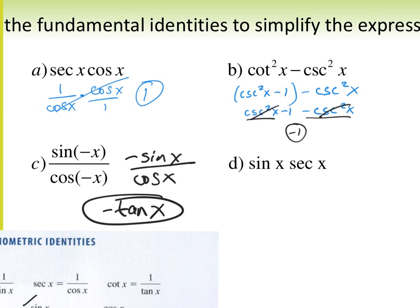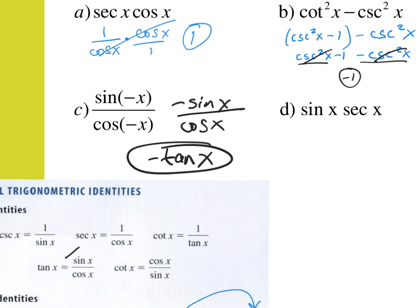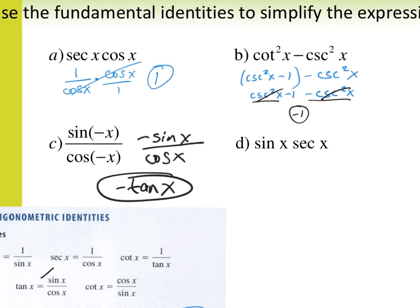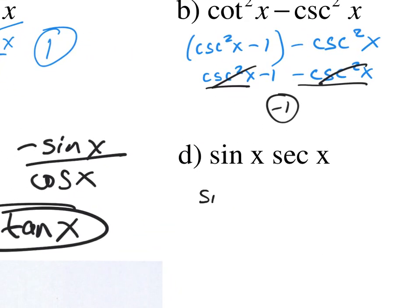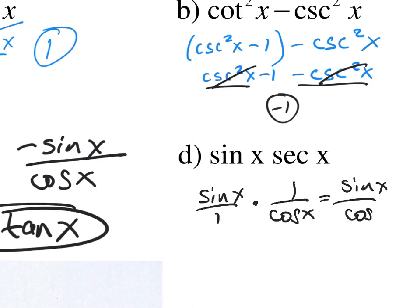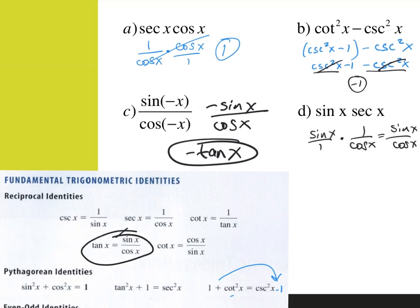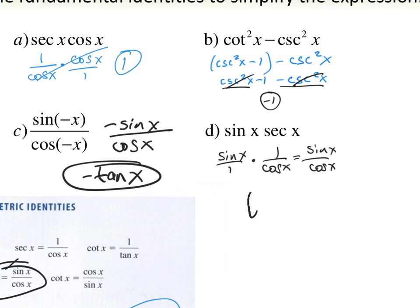Here I have sine times secant. Secant is the same as 1 over cosine. So I have sine of x over 1 times 1 over cosine x. If I multiply these, I get sine x over cosine x. And sine x over cosine x is my tangent x. So you're always trying to simplify — meaning make it smaller. If you look at my answers, they are all much smaller than the problems they begin with.